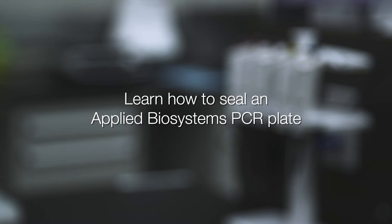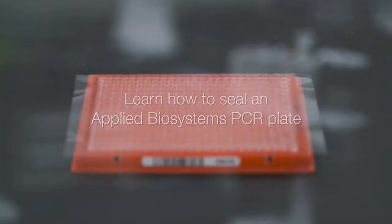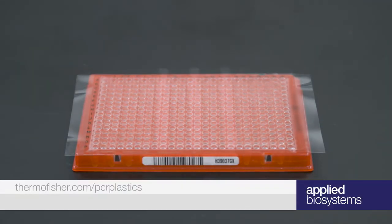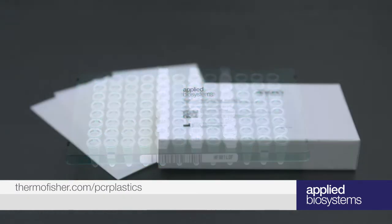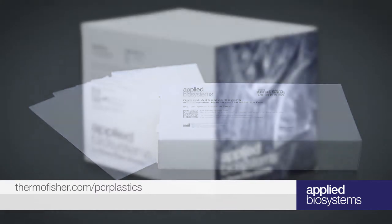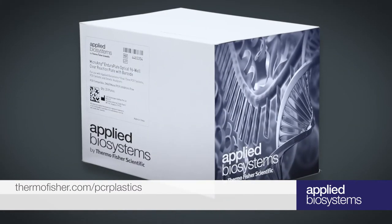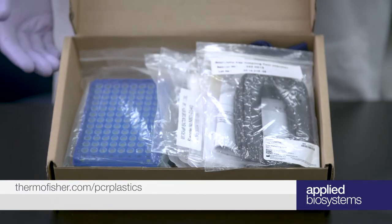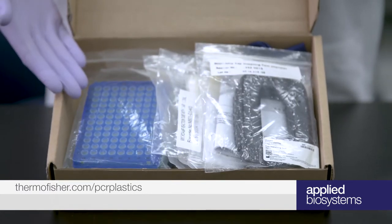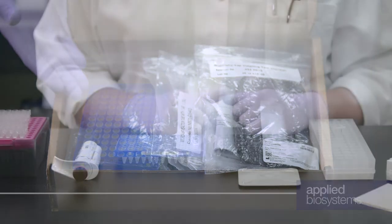In this video, we'll discuss how to properly seal a plate using two methods, the use of an adhesive film and cap strips. You can find everything you need for these applications in your Applied Biosystems Thermal Cycler Starter Kit, which comes with the purchase of a new Applied Biosystems Thermal Cycler or at thermofisher.com slash pcrplastics.